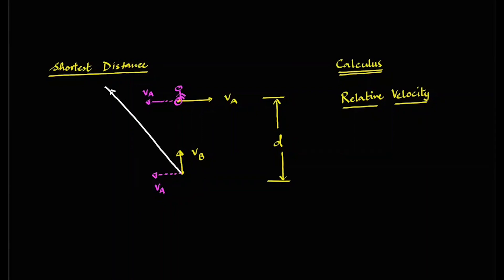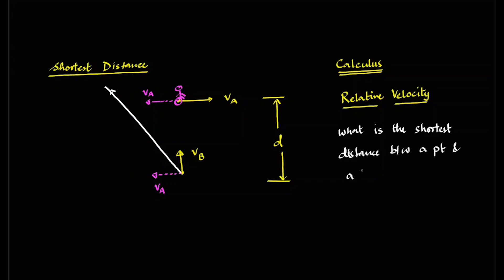Now I will ask you: what is the shortest distance between a point and a line? The answer is pretty simple — if you drop a perpendicular from the point (since A is stationary), that perpendicular becomes the shortest distance. So this perpendicular line is the shortest distance, and we can simply use trigonometry to find our answer.